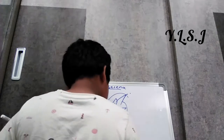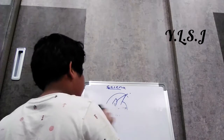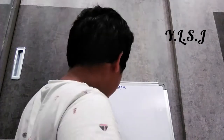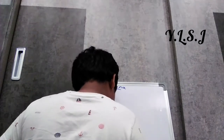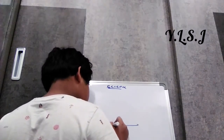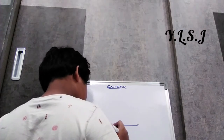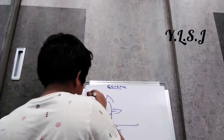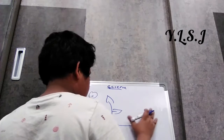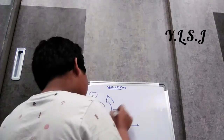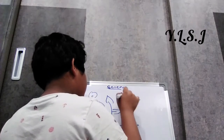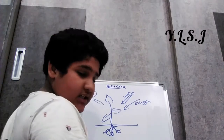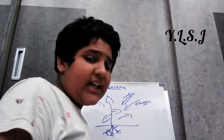Now let's talk about photosynthesis. The sunlight rays fall, water comes in, oxygen is involved, and carbon dioxide is released. This process is called photosynthesis.